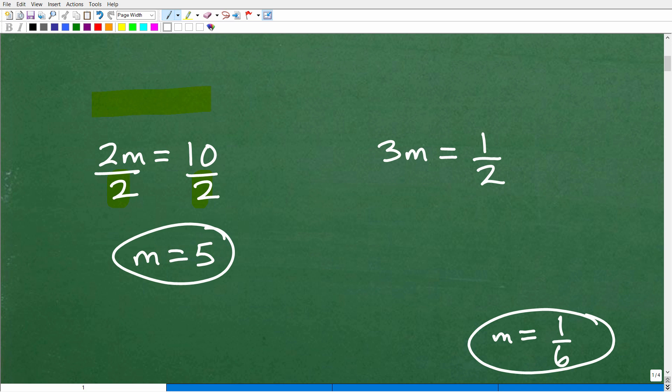All right, so here we have 3m is equal to one-half. So anytime you're working with a fractional equation, instead of creating a complex fraction, what you can do is take this number in front of the variable. In this case, it's 3. And just multiply each side by the reciprocal of that number. So how can we write the number 3 as a fraction? So some of you might be saying, well, it's not a fraction. It's just a number. No, you can make any number a fraction by just putting it over 1 because 3 divided by 1 is, in fact, the same thing as 3. So we can think of 3 as a fraction as just 3 over 1. So what you want to do is multiply both sides of the equation by the reciprocal.